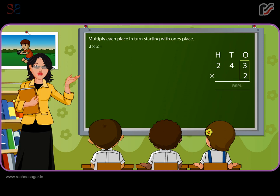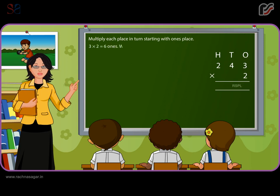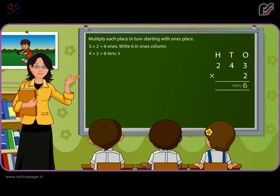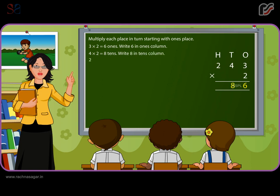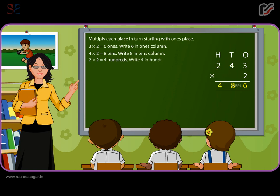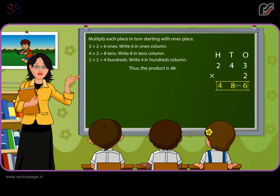3 multiplied by 2 is equal to 6 ones — write 6 in the ones column. 4 multiplied by 2 is equal to 8 tens — write 8 in the tens column. 2 multiplied by 2 is equal to 4 hundreds — write 4 in the hundreds column. Thus, the product is 486.